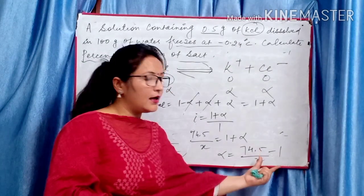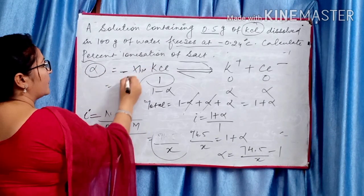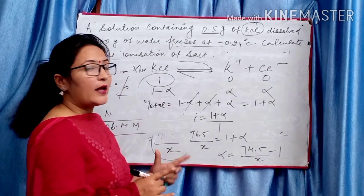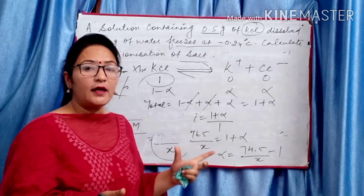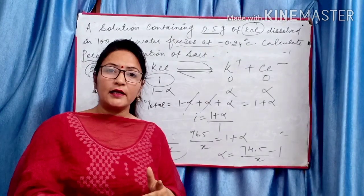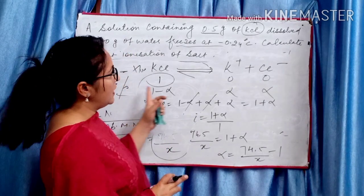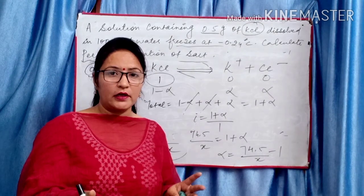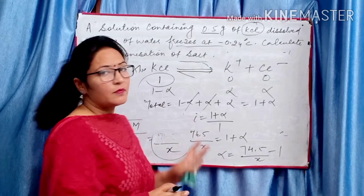Multiply alpha by 100 to get percent ionization. To solve Van't Hoff factor numericals, theory must be clear — don't just memorize formulas. You need to know what step comes next when finding i. There are two methods: using observed colligative property vs. normal colligative property, or using molar mass comparison. Which to use depends on what data is given in the question — observed molar mass or observed colligative property.